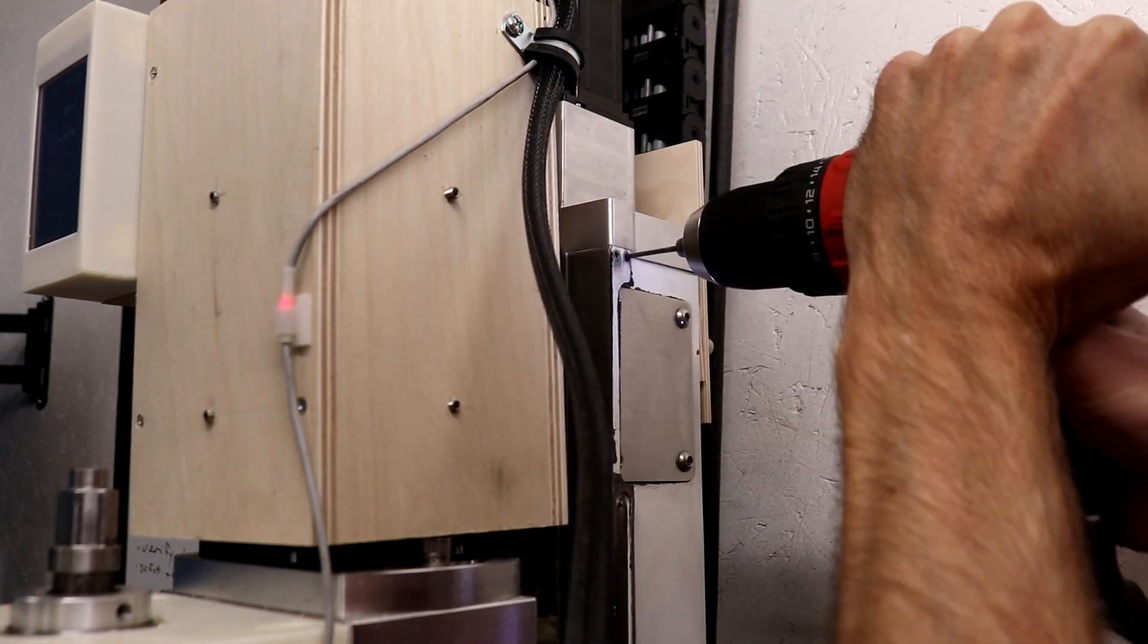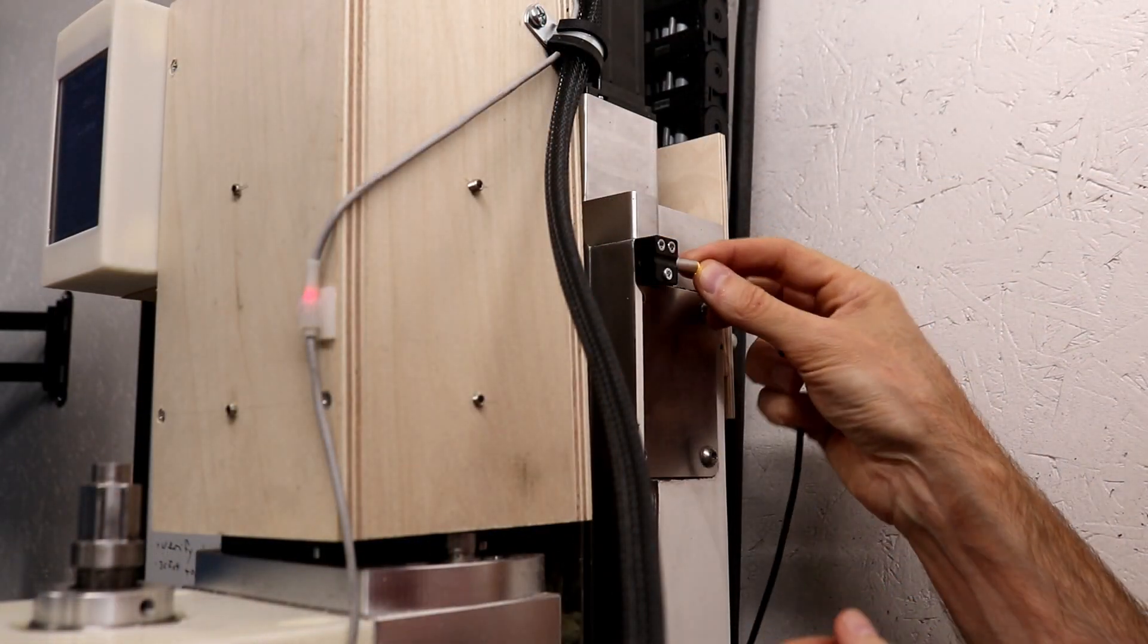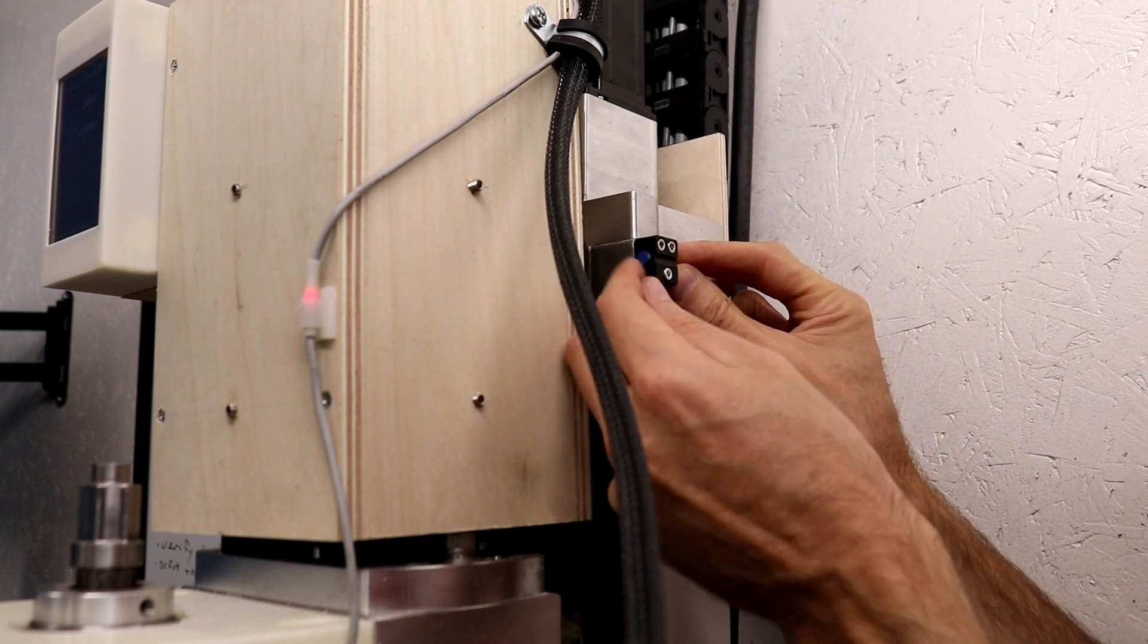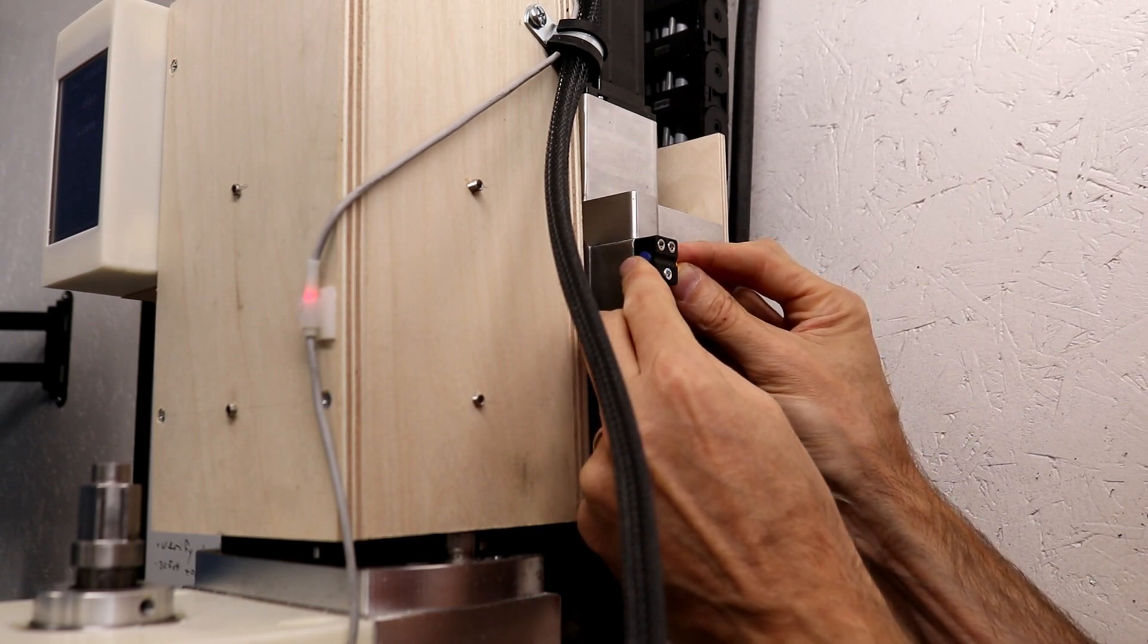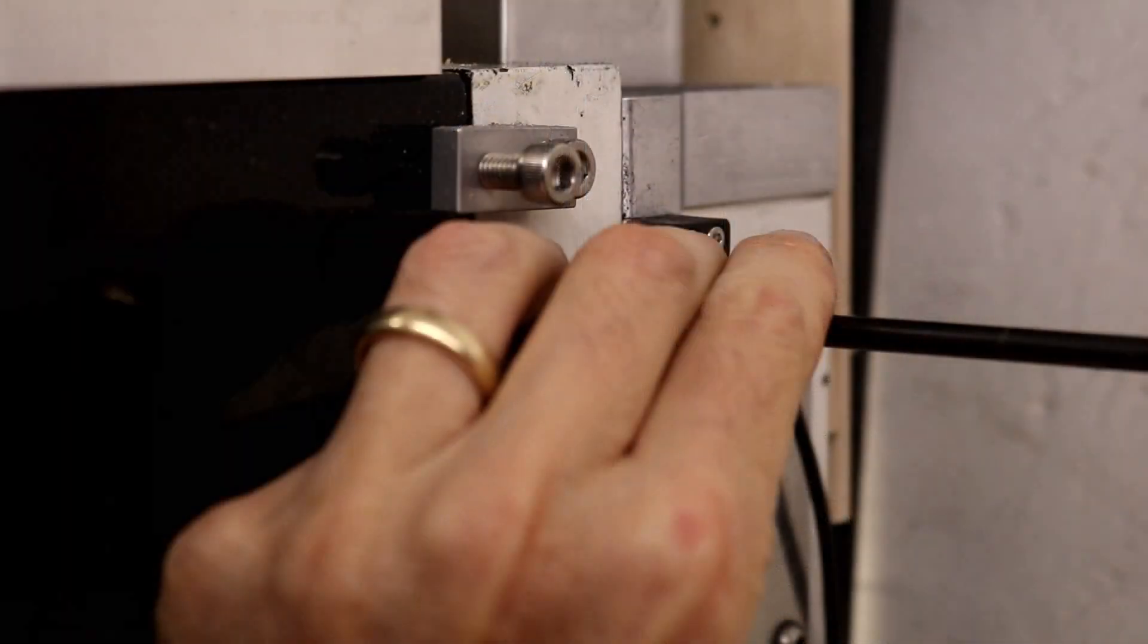Installation of the inductive sensors and targets is a lot of match drilling. Each part is held in place. A transfer punch is used to transfer the hole pattern to the mill. A center punch is used to create a nice base for the drill. The hole is drilled to a tap size, the hole is tapped, and the part is installed.